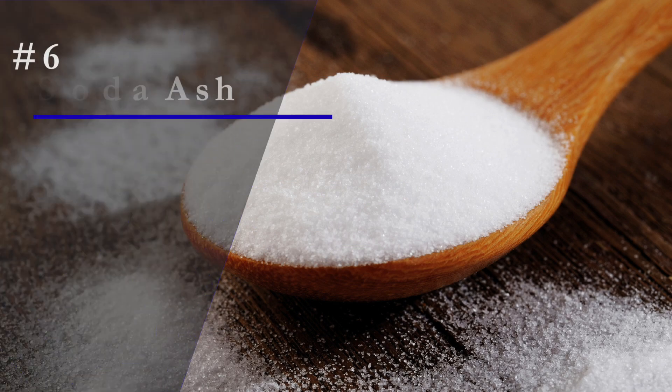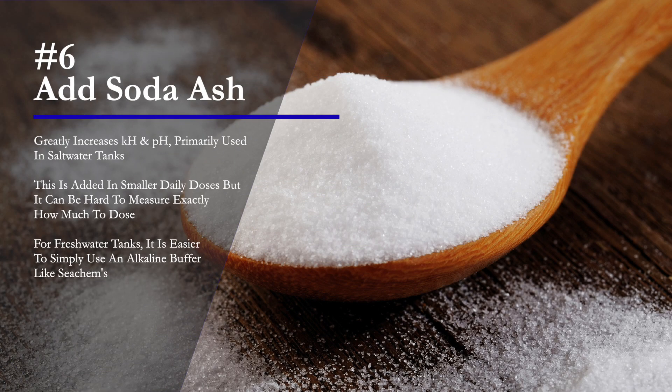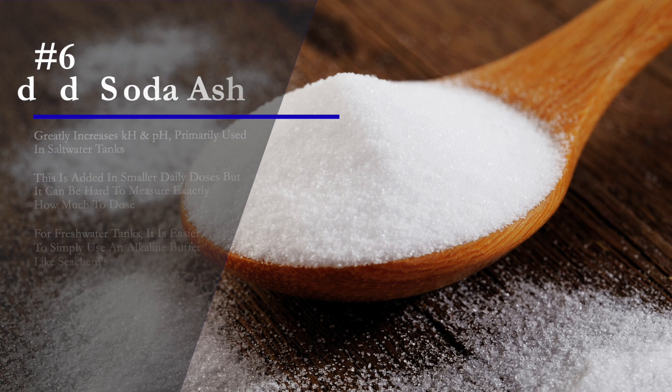Number six, last but not least, you can add soda ash to your tank. This will greatly increase KH and pH, which is why it's primarily used in saltwater tanks. It's added in small daily doses but can be hard to measure, so it's much easier to simply use an alkaline buffer like Seachem's — though soda ash is an option.